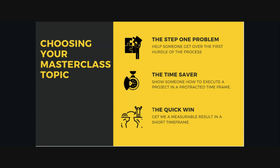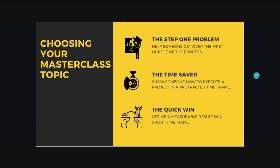Continue to think about what you want your idea to be, and then let's talk about how to validate it. Validating the idea is important. This is a post I did a few years ago — I put out to my Facebook audience: 'I'm thinking about creating a masterclass to help you craft a signature talk and make $10,000 from speaking in 30 days. $97 — who's in?' You can do this same thing: 'Thinking about creating a masterclass on failure for teachers. $97. Who wants to be a part of this?' Simple — put it out there.